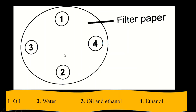In our experiment we are given a filter paper, and our filter paper is divided into spots. Remember it's spot test for liquids, so you have spot number one, two, three, and four. We are given a key that guides us on what to put at each spot. At spot one you add oil, spot two you add water, spot three you add oil plus water, and spot four you add ethanol — all on one filter paper.